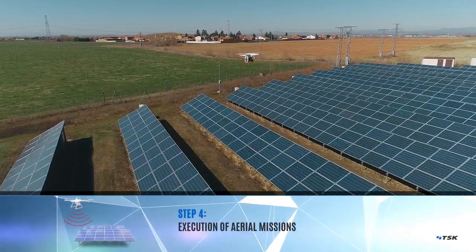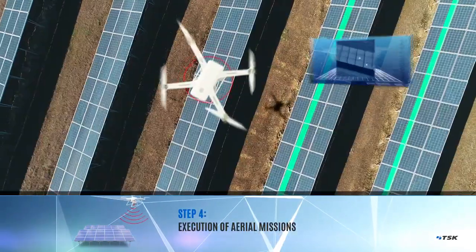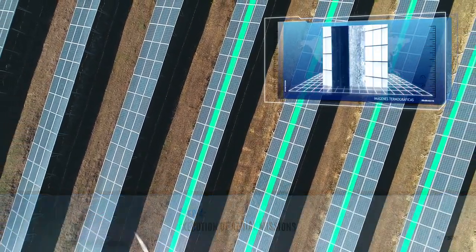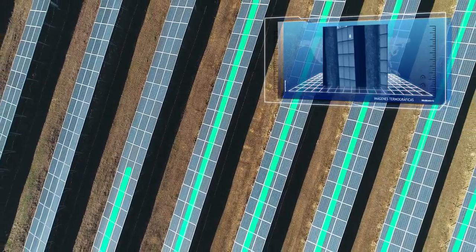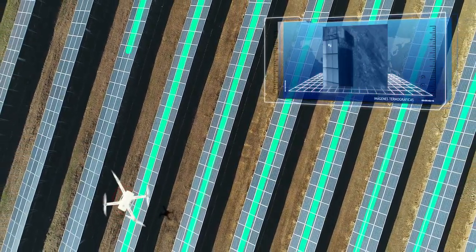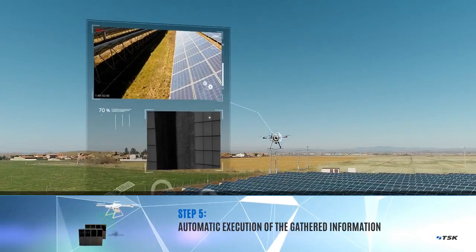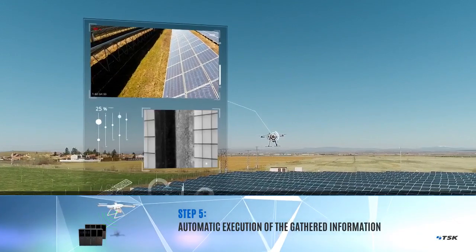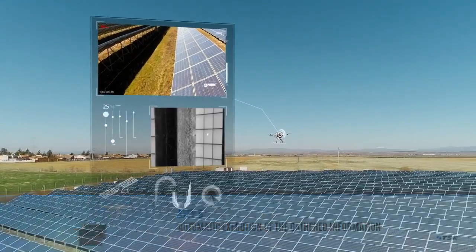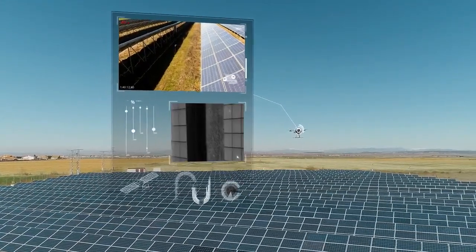Once the information is received, the drone flies over the specified areas, even the whole plant if necessary. In the case of a photovoltaic plant, the drone captures thermographic images of the solar panels. As far as possible, the drone will automatically send all the information gathered in real time to a remote monitoring system. If this is not possible due to reception issues, delivery would be carried out at the end of the mission.